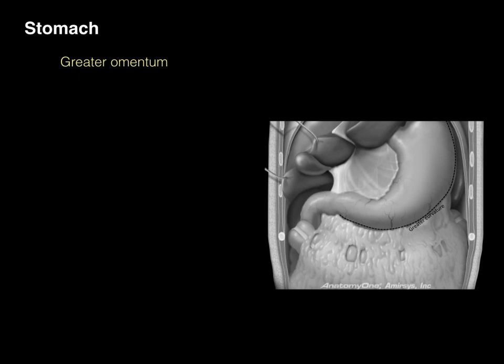The greater omentum arises from the greater curvature of the body of the stomach and descends down to cover all the abdominal viscera. It's called the guardian of the abdomen because within all this omentum — connective tissue and a lot of adipose tissue — there are numerous lymph nodes that surround areas of infection or tumors, encapsulating them. In abdominal surgery, surgeons often look to see what the greater omentum is doing to see if it has migrated and surrounded an area of infection.